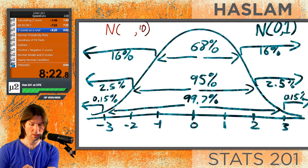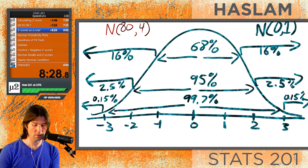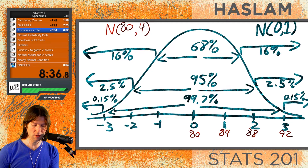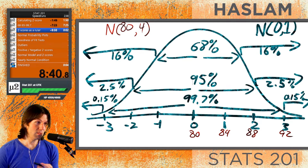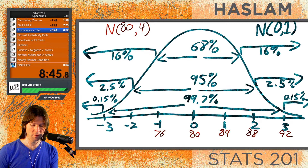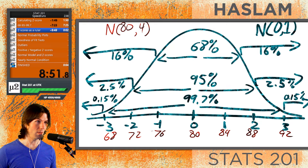If you had another test with a mean of 80 and a standard deviation of 4, and you made a 92, you'd still have the same z-score of 3 — still three standard deviations above the mean. On that second test, making an 80 would just be the average. Z-scores can be used to compare observations across different distributions — it's a ruler for how far above or below the mean you are.